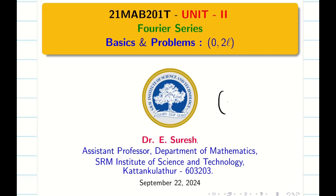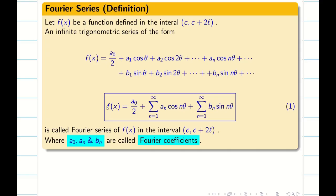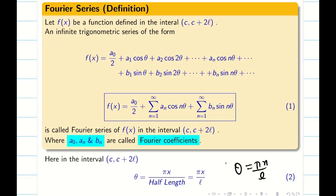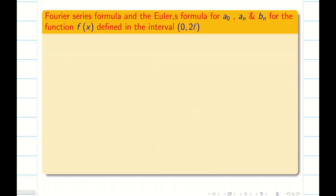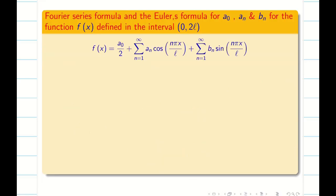Dear students, welcome to the problem solving session on Fourier series under the interval [0, 2L]. In the previous videos, we were discussing about [0, 2π]. We have discussed a lot about the general Fourier series in all our previous videos. I am directly showing this formula, where θ = πx/L. L is my half length. The formulas for a₀, aₙ, bₙ are depicted as follows. Our concern is the interval [0, 2L], so when I put c = 0, c + 2L becomes 2L. Therefore, the general Fourier series formula under the interval [0, 2L] is as follows.